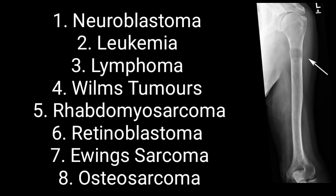Neuroblastoma is a type of cancer that forms in neuroblasts — immature nerve cells. It involves the adrenal glands, neck, chest, and spinal cord.